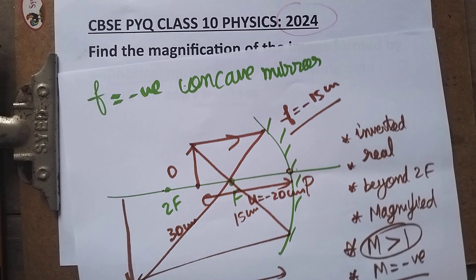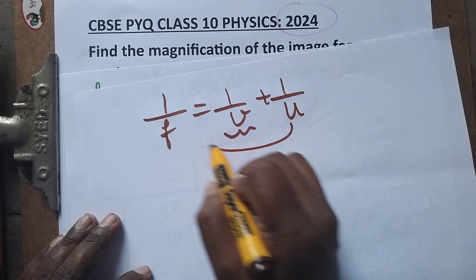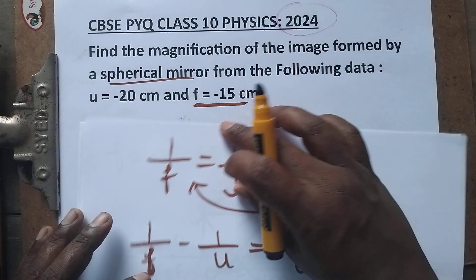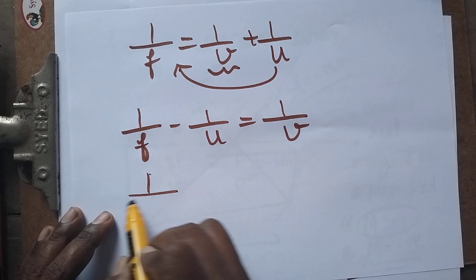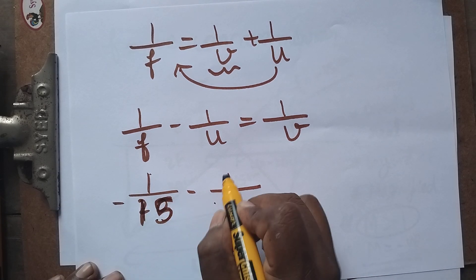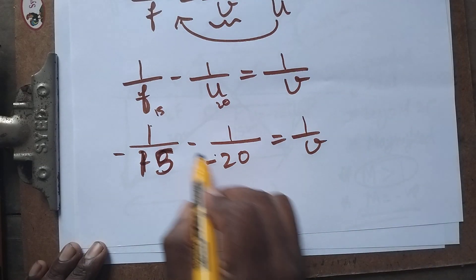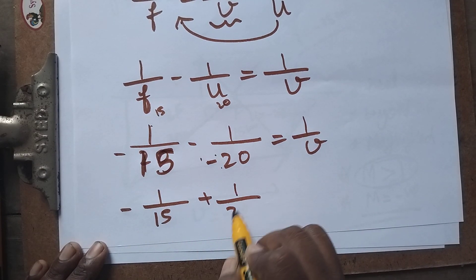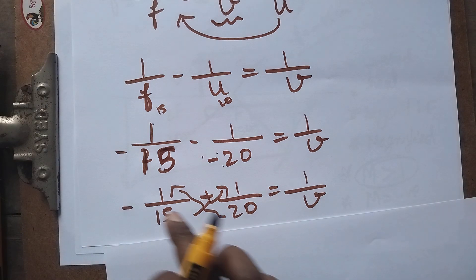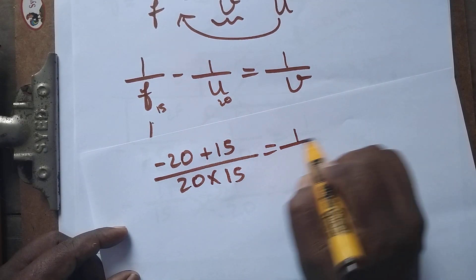From the diagram alone we found the expected answer. Now we'll solve the problem using the mirror formula: 1/f = 1/v + 1/u. Rearranging: 1/v = 1/f − 1/u. f = -15 cm and u = -20 cm. So 1/v = 1/(-15) − 1/(-20), which gives us minus 1/15 plus 1/20. Taking the LCM of 15 and 20, we bring the terms to a common denominator.